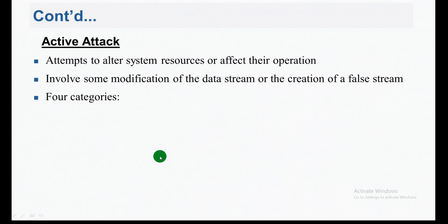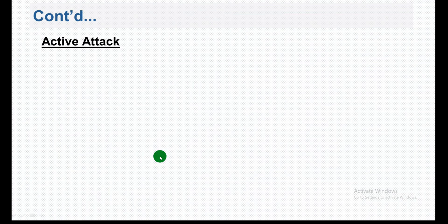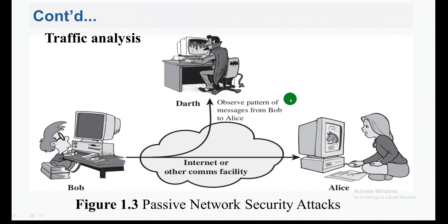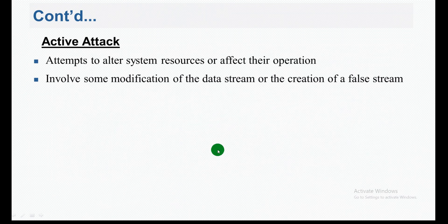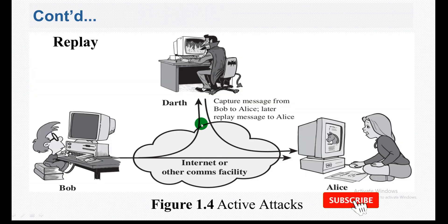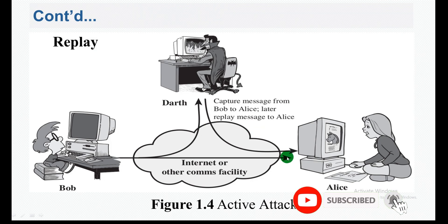In a replay attack, the attacker captures the message and then replays it — sending it again to Alice. The attacker already has access to the captured data and uses the channel to replay it. This is the active attack known as replay, where captured data is re-sent.